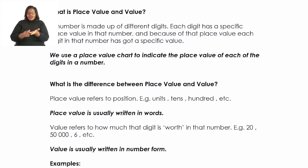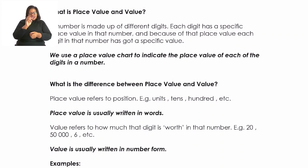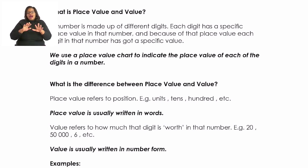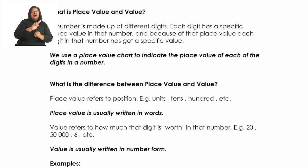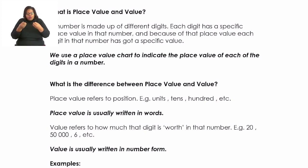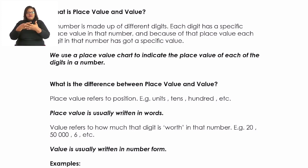From the place value we get the value. Value is how much that digit is worth — is it worth 30, 300, 3,000, or 30,000? Please remember the difference between place value, which is units, tens, hundreds, thousands, and value, which refers to how much the digit is worth — 20,000, 50,000, six, et cetera. We usually use a place value chart to record our digits, and from that chart we get both our place value and our value.